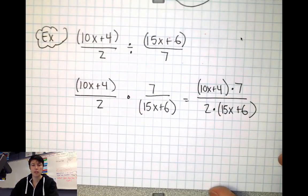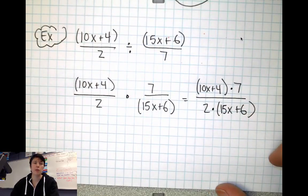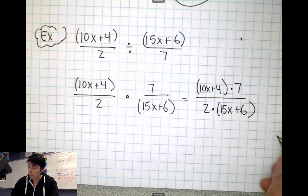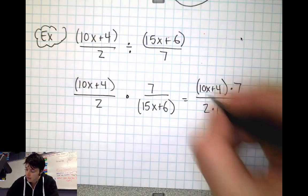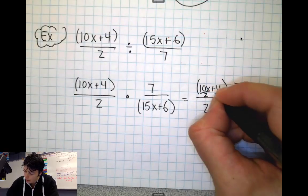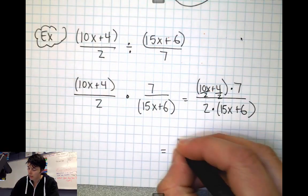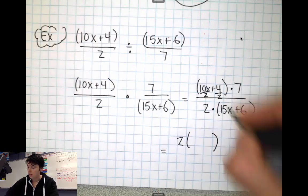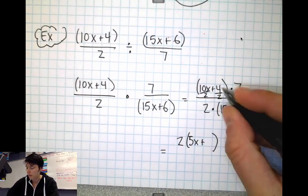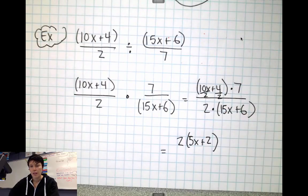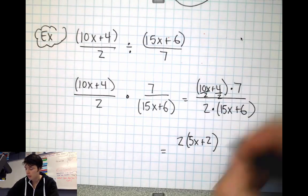And then my job is going to be, of course, to simplify this. We want to simplify all of our answers. So the 10x+4, let's think about what I could divide out of there. I could probably divide a 2 out pretty easily. So on top, I'm going to divide that 2 out. 10 divided by 2 is 5x, plus 4 divided by 2 is 2. And then I still have this times 7 over on the other side. So that's going to be the top of my fraction.